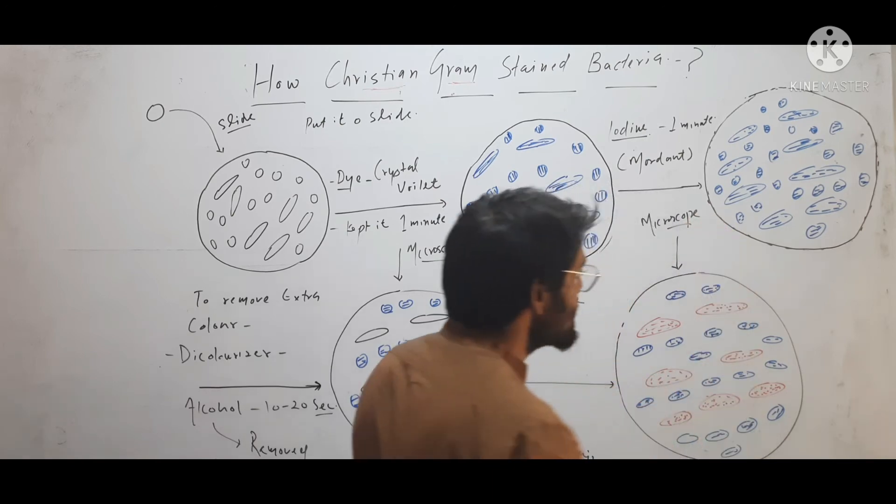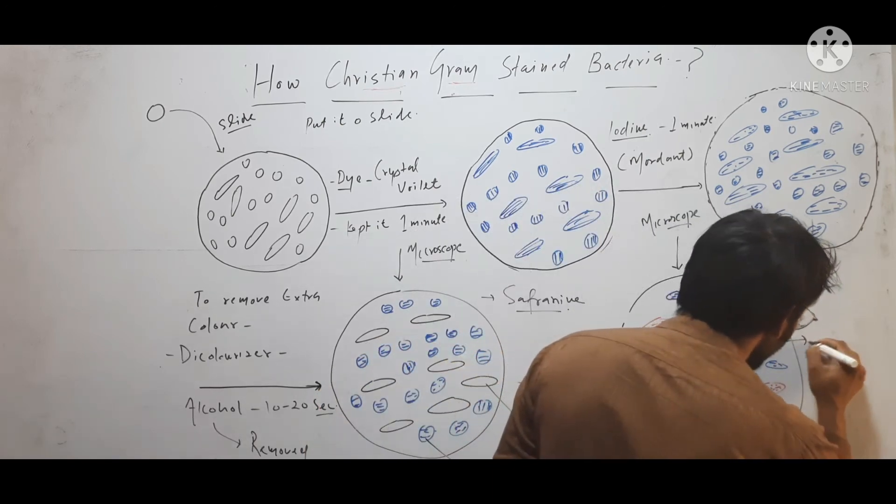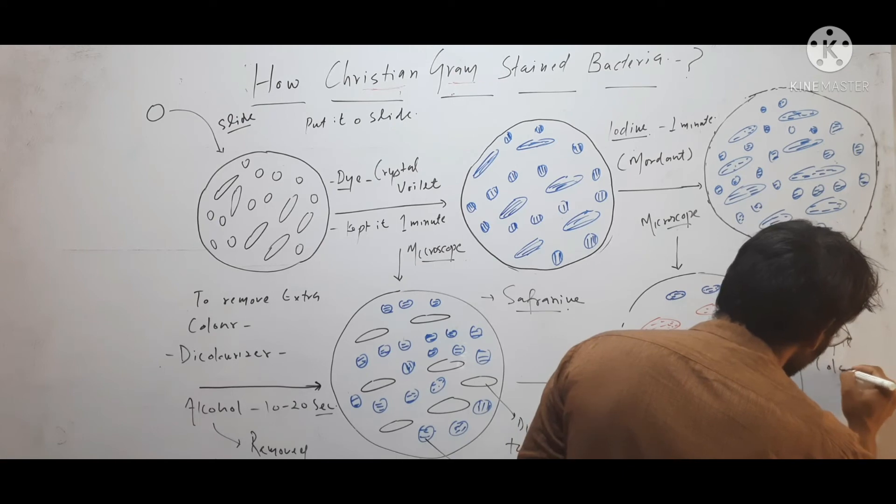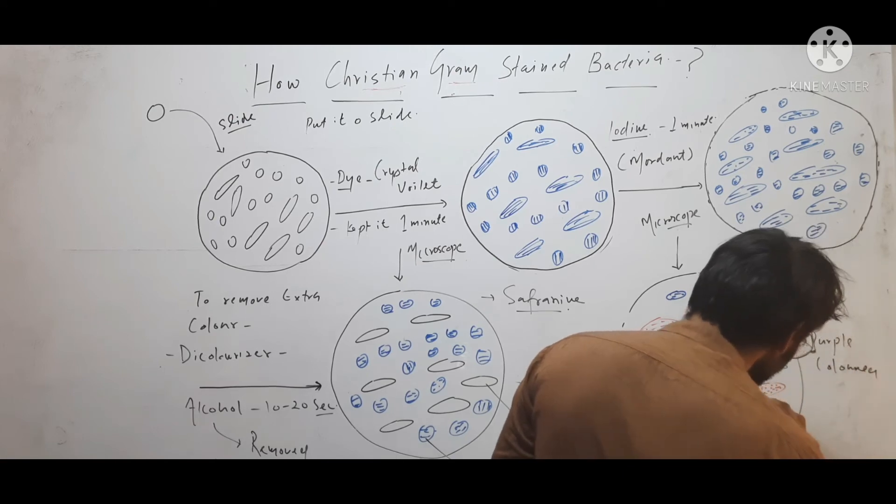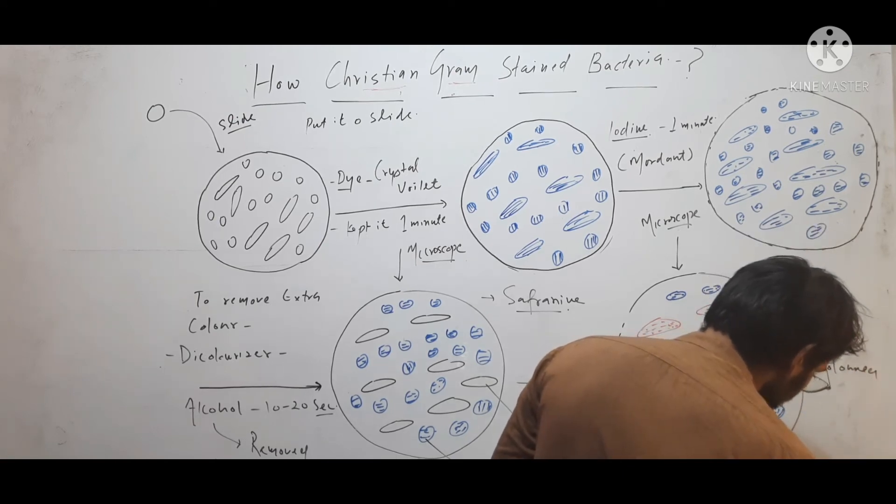And what he found? Some cells were purple colored and other cells were red colored.